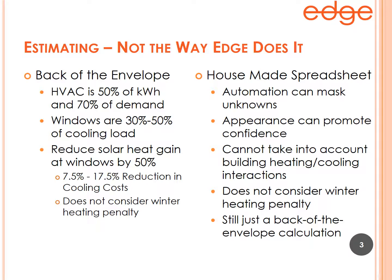It also doesn't consider many of the caveats that come with these rules of thumb. Windows being 30 to 50% of the cooling load will certainly be a different number in Phoenix versus Chicago. The second method Edge does not use is a house-made spreadsheet.